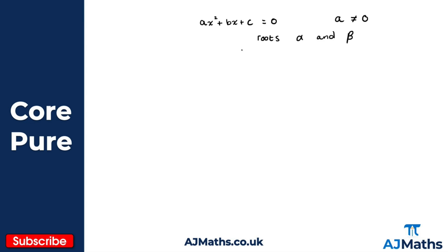What we can do is take this quadratic, set equal to zero — ax squared plus bx plus c equals zero — and since we know the roots are alpha and beta, we can write this as a times (x minus alpha) times (x minus beta).